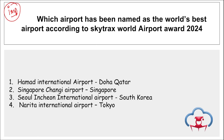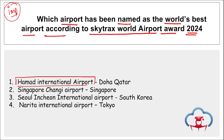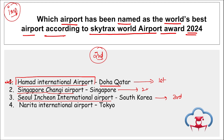Which airport has been named the world's best airport according to the Skytrax World Airport Awards 2024? It is Hamad International Airport of Doha, Qatar, which secured the first position. Singapore's Changi Airport secured the second position, and Seoul's Incheon International Airport of South Korea secured the third position. Tokyo's Narita International Airport was awarded the Best Airport Staff Service award.